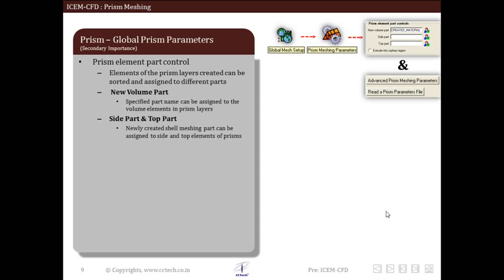Next parameter is prism element part control. New elements formed during creation of prism layers can be sorted and assigned to different parts using this style. First is a new volume part.